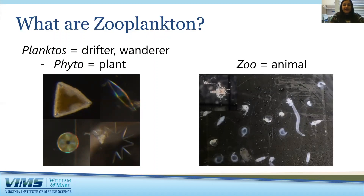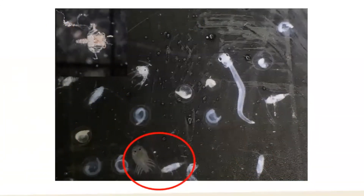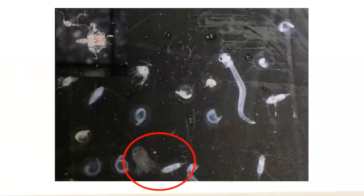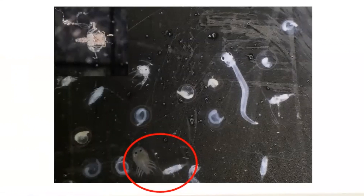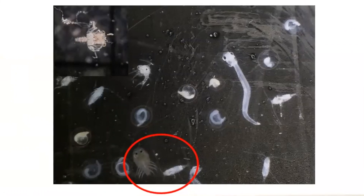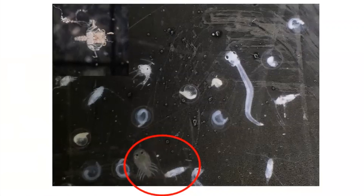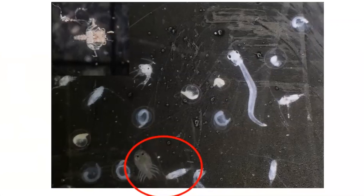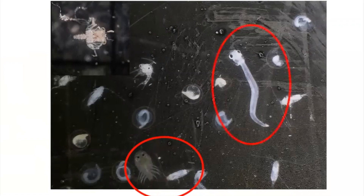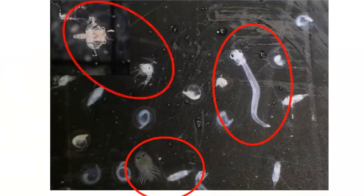Some zooplankton spend their entire life as plankton, like these copepods in the red circle here. Copepods are actually the most abundant animal on earth, which is a really interesting fact. Other animals in the zooplankton group spend only part of their life as plankton before they grow into their adult form. That includes things like this larval fish here in the photograph, as well as larval crabs.